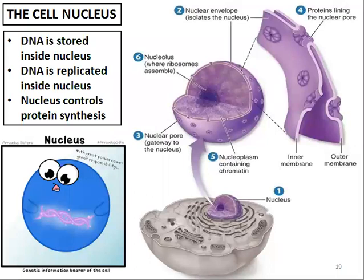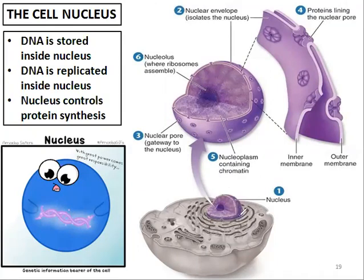Now I'm going to start with the first organelle, which is the cell nucleus. Taking the eukaryotic cell — not the prokaryotic cell, because prokaryotic cells don't have a nucleus — here is the nucleus. The nucleus carries the genetic material, which is the DNA, which is the double helix, double strand, as discussed in chapter 3. The nucleus contains what we call a nuclear envelope.